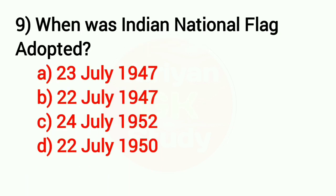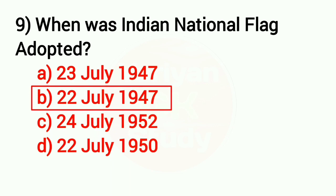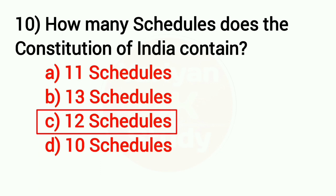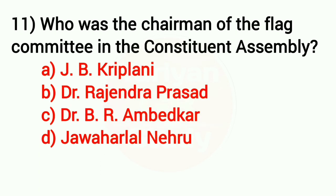Question number 9: When was the Indian National Flag adopted? Answer: Option B — 22nd July 1947. Question number 10: How many schedules does the Constitution of India contain? Answer: Option C — 12 schedules.